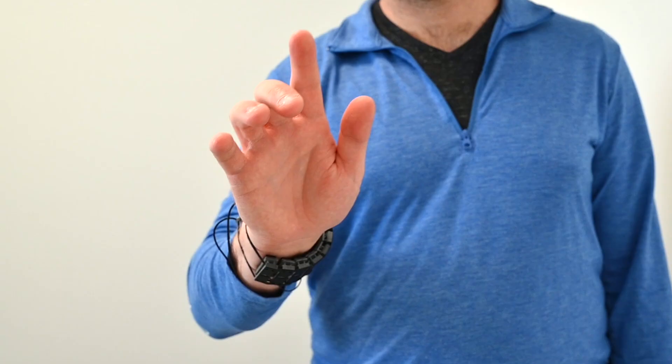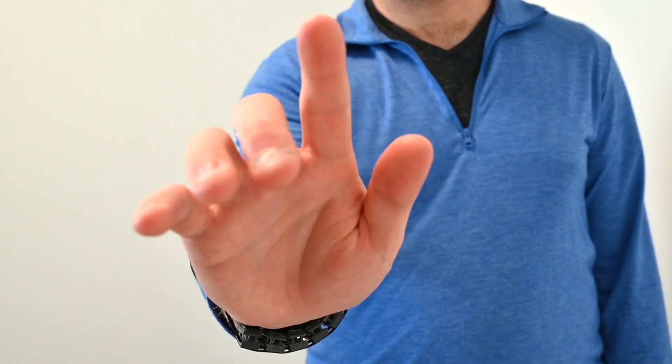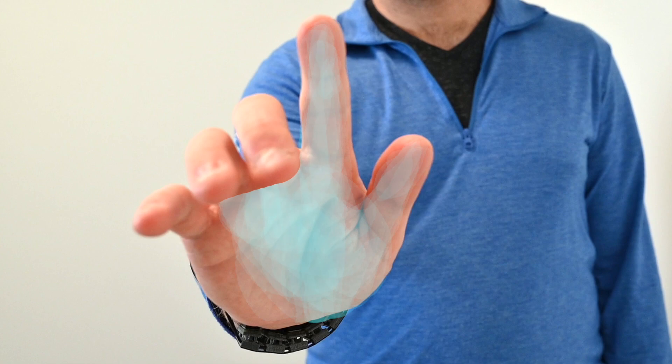How? This wristband device stimulates the nerves at the wrist, innervating the hand. This provides a touch sensation across the palm and fingers,